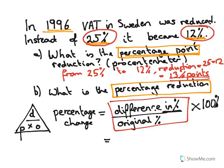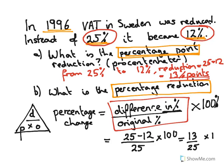So the difference in percentage here is that we started with 25 and changed to 12, divided by the original, which was 25, multiplied by 100. That gives us 13 divided by 25 times 100. The easiest way to convert 13/25 into hundredths is to multiply top and bottom by 4: 13 times 4 gives 52, and 25 times 4 gives 100.